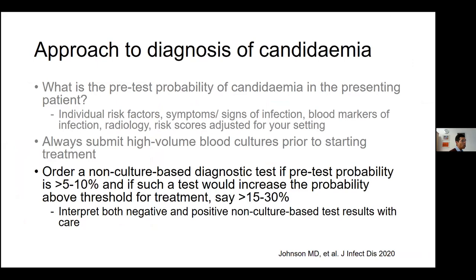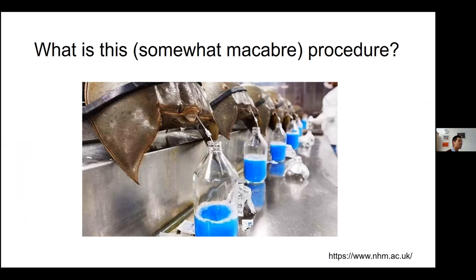The other option is to order a non-culture-based diagnostic test if the pretest probability is reasonably high and if that test will increase the probability above the threshold for treatment — say a threshold of 15 to 30%. Just be careful with these non-culture-based diagnostic tests because they're not perfect by any means.